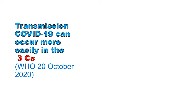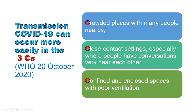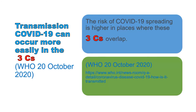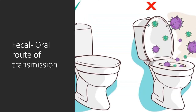COVID-19 transmission can occur more easily in the three Cs. The first C is crowded places with many people nearby. The second C is close-contact settings, especially where people have conversations very near each other. The third C is confined and enclosed spaces with poor ventilation. The risk of COVID-19 spreading is higher in places where these three Cs overlap.